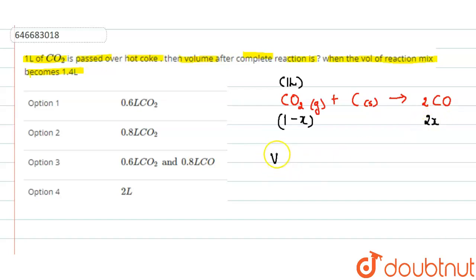Now, volume total depends on volume of carbon dioxide plus volume of carbon monoxide. So volume of carbon dioxide is 1 minus x liter plus volume of carbon monoxide is 2x liter. Total volume is given 1.4 liter.